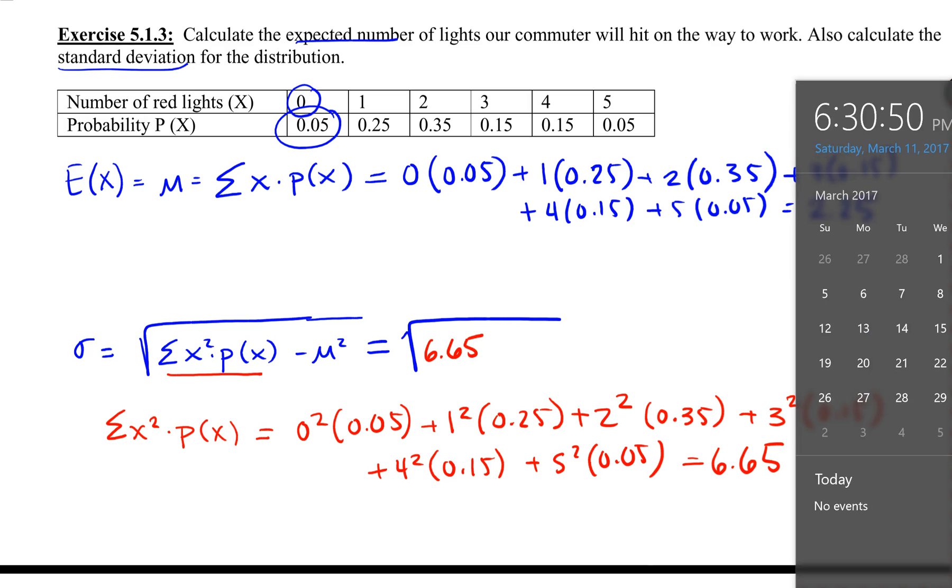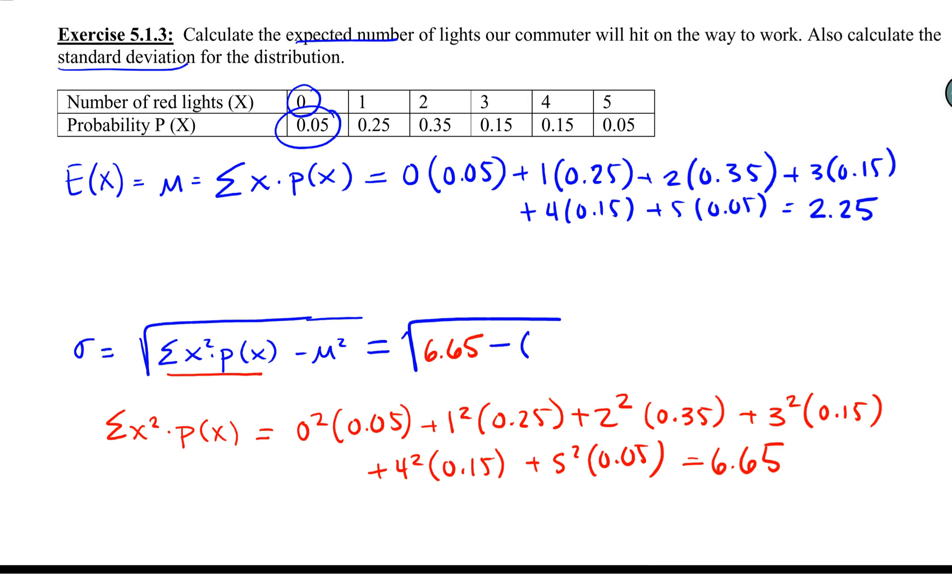We still need to subtract off our mean squared, which we found previously, and do the square root of all of that. We get 1.25996, which we round to 4 decimal places: 1.2600. So those are our two values.